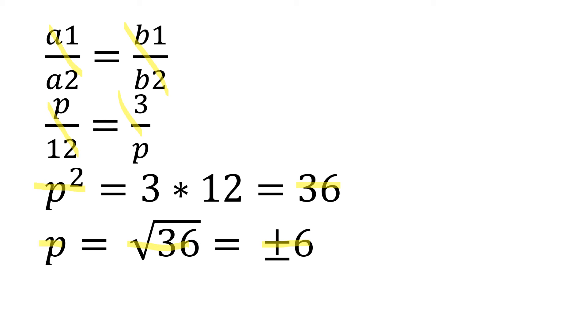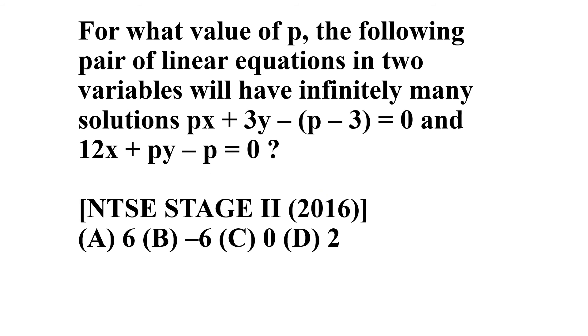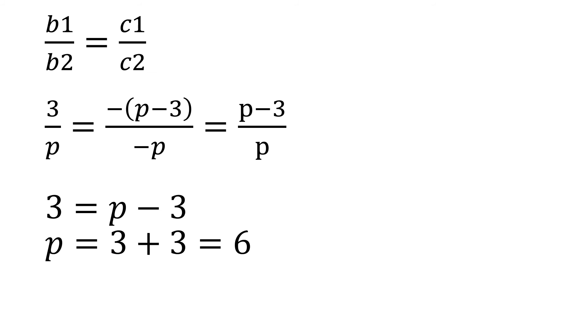In this case, we are going to have to move forward taking the c1/c2 criteria because here we have both the options of 6 and minus 6. So we are going to take the c1/c2 criteria.